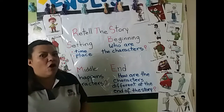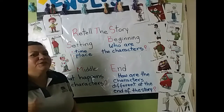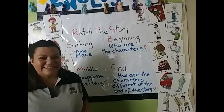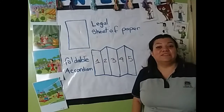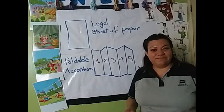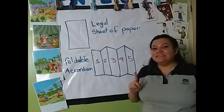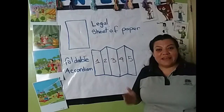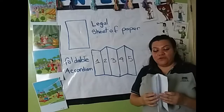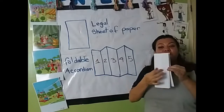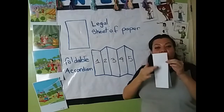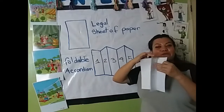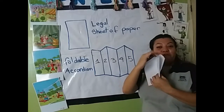Let me show you an example of how you have to put the parts of the story that you are going to do in your midterm test. Let's do the foldable accordion. For this, we need a legal sheet of paper, and then let's start folding the accordion. I have an example here. We are going to use five pages — one, two, three, four, and five — for the accordion.